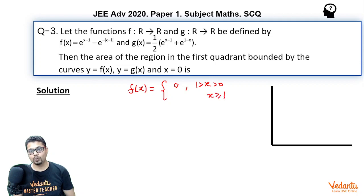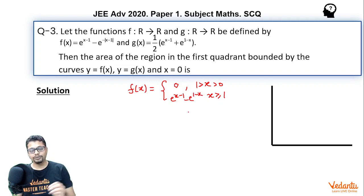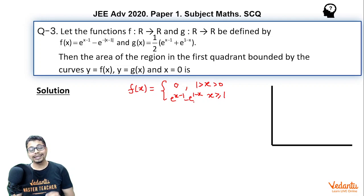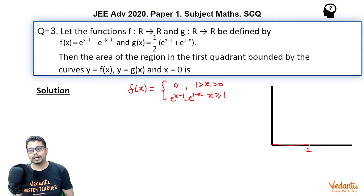Now, what if x is greater than or equal to 1? f(x) becomes e^(x−1) minus e^... now |x−1| will open with plus sign and become x−1, giving e^(1−x). So f(x) is 0 for x in [0,1], and then f(x) increases. As x increases, e^(x−1) increases and e^(1−x) decreases, so the whole term increases. You can expect the f(x) curve to be 0 until x=1 and then increase.